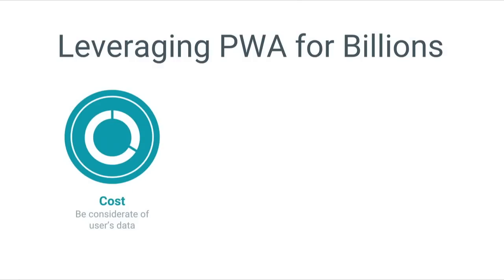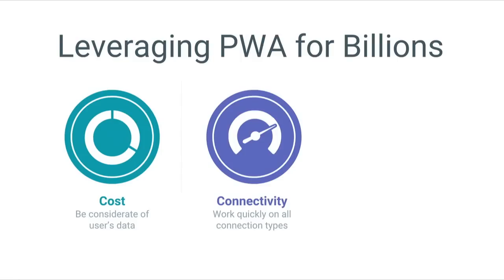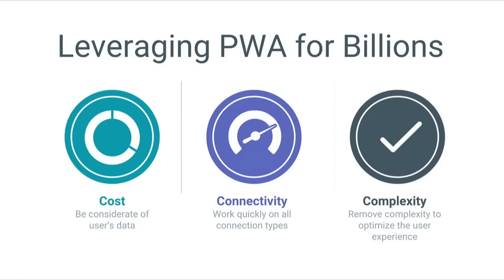A few key principles to keep in mind when developing progressive web apps: First, cost — data can be prohibitive, so make sure your experience works as well as possible without forcing unnecessary data trade-offs. Second, connectivity varies — with the majority of global users on 2G, your experience must load as quickly as possible on all connection types. Third, reduce complexity — make every step as easy as possible and leverage the benefits of re-engagement.